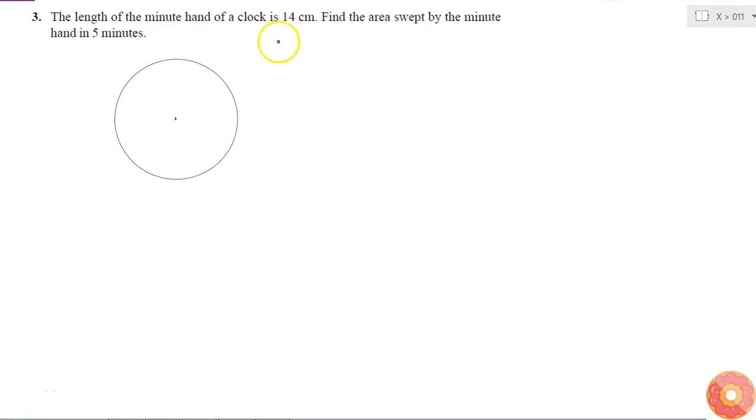The length of the minute hand of a clock is given as 14 centimeters. If I consider the tip, the movement motion of the tip is a circle because the minute hand moves in a circle. So let's say this is my minute hand, this length is 14 centimeters.